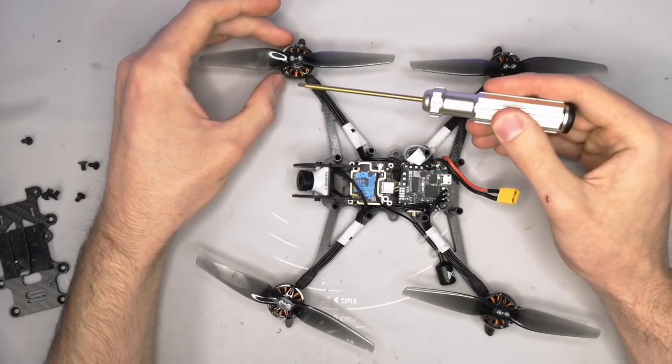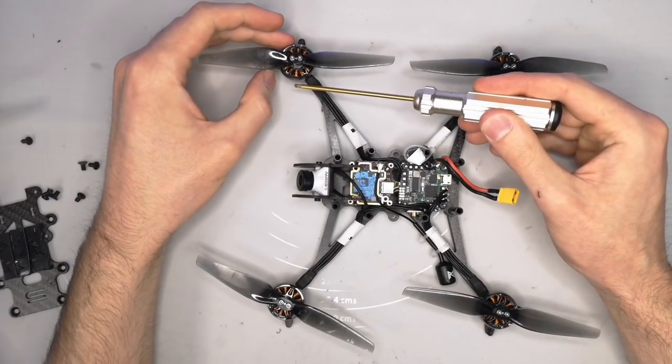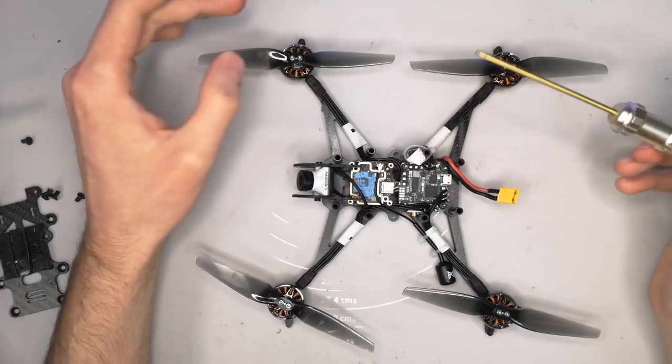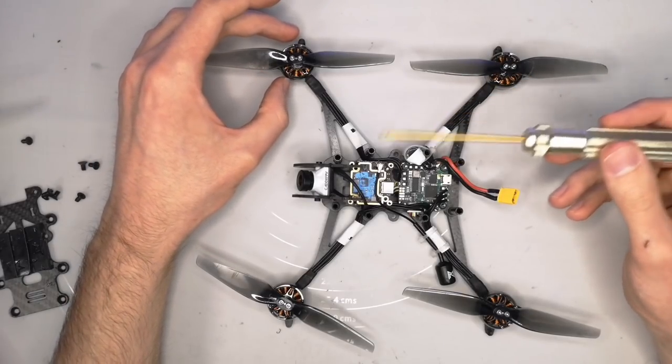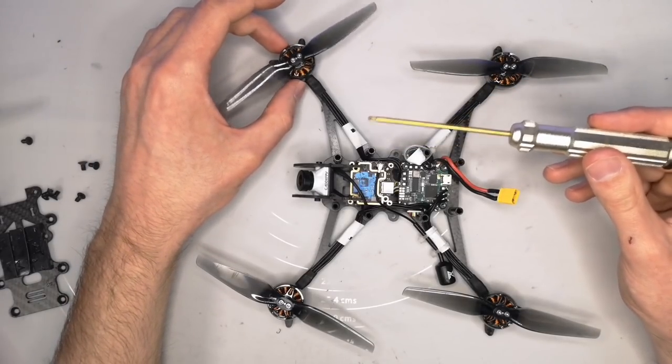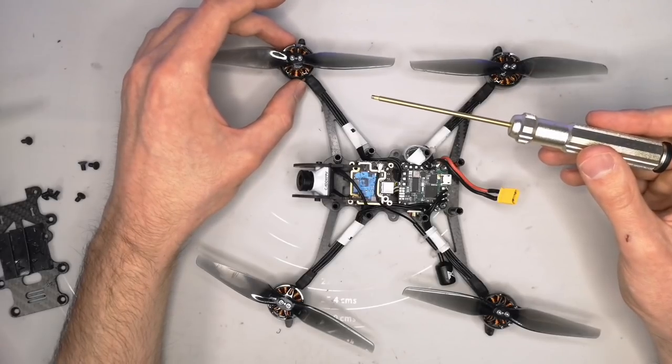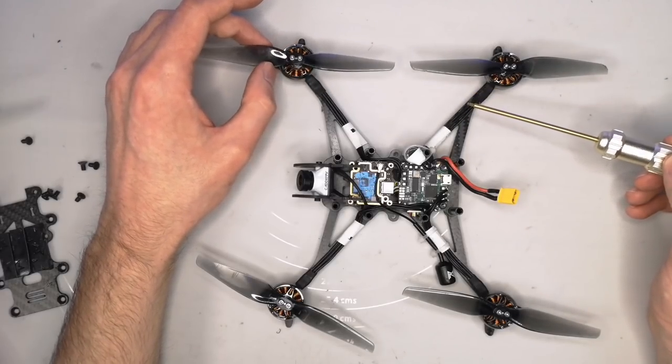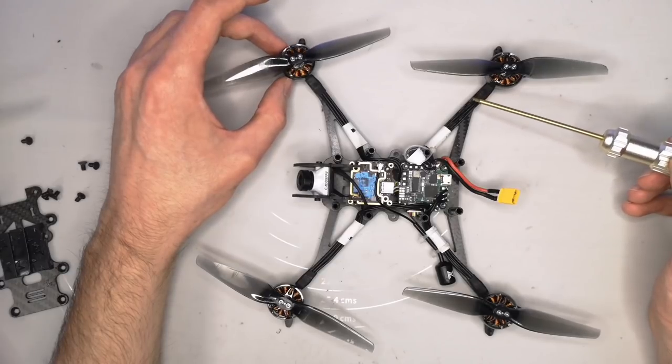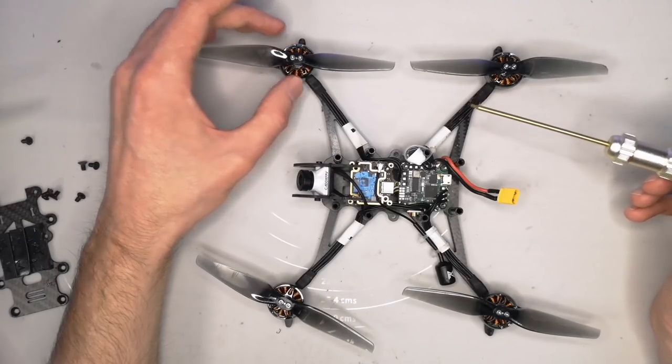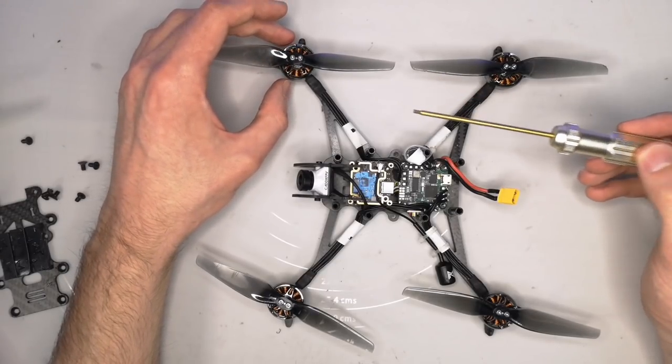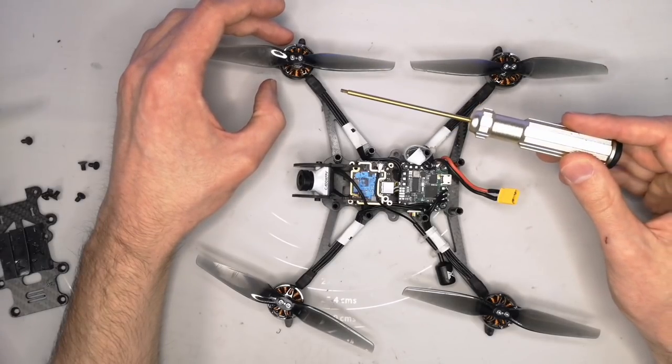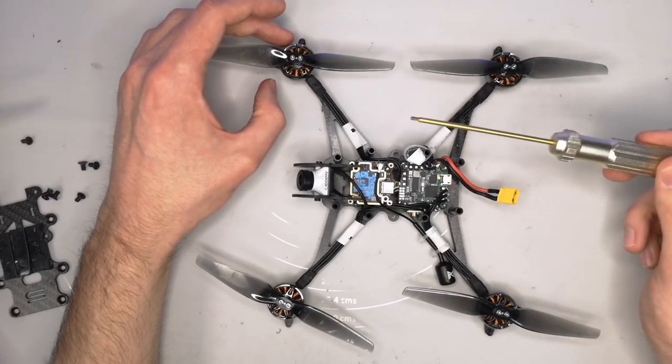The motors that I'm using on this build are the Emax Eco2 2104 motors and I did a video, I'll put a link down in the video description, showing these motors and comparing them with some other ultralight 5 inch motors. And to my mind the Eco2 has actually performed the best out of all the motors that I looked at which is great considering they were also the cheapest. So I couldn't really justify using any other motor on this build apart from the Emax Eco2.